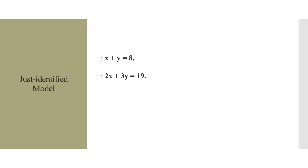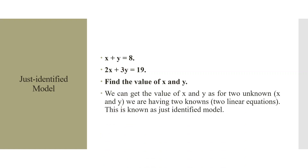For a just-identified model, consider: x + y = 8 and 2x + 3y = 90 — find x and y. We can get unique values of x and y because for two unknowns we have two linear equations. This is known as a just-identified model.